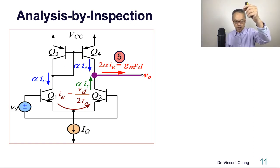If you replaced IE with VD, you can see VD replaced IE with VD over 2RE. Then 2 got canceled. Alpha divided by RE equals gm. Therefore, the output current is gm VD.